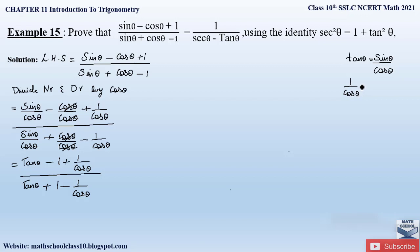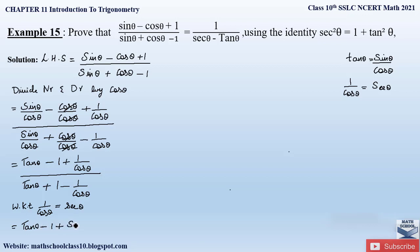We know 1/cos θ = sec θ. Substituting, we can obtain tan and sec values in the numerator and denominator. So we write: (tan θ − 1 + sec θ) divided by (tan θ + 1 − sec θ).